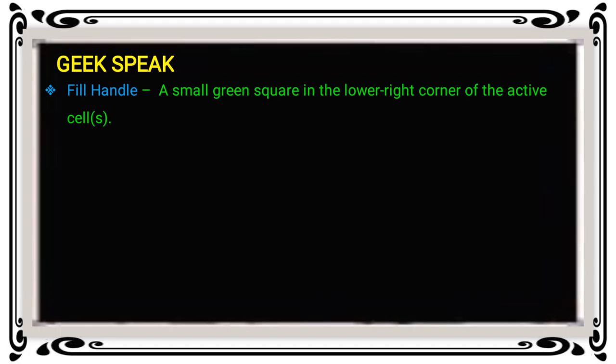A small green square in the lower right corner of the active cell. Normally, when we use an Excel document, at the end of the selected cell in the lower right corner, a green square mark is identified — it is called the fill handle.